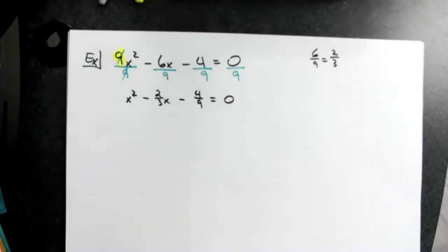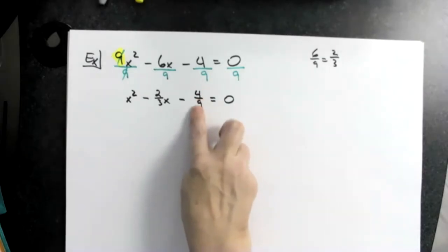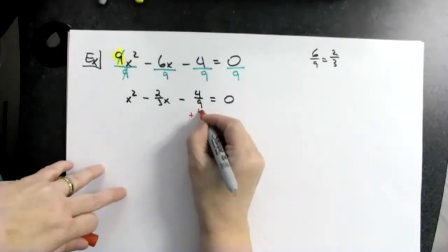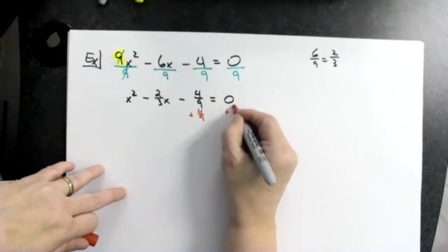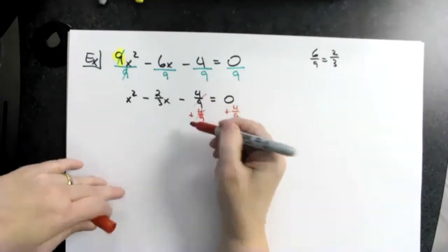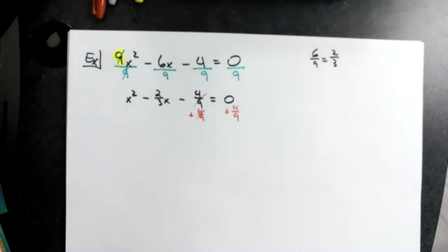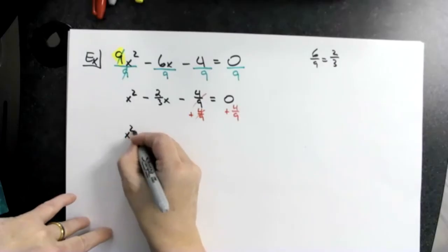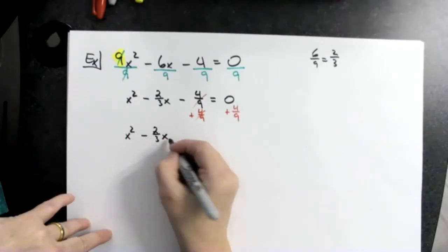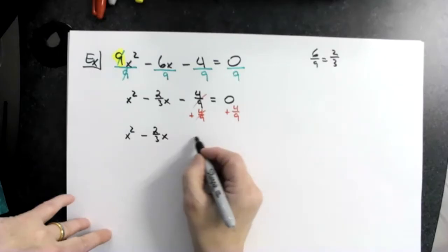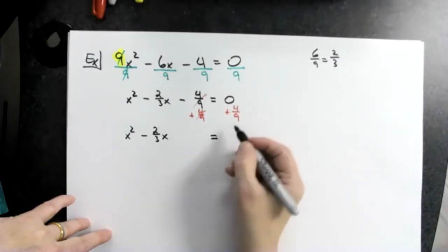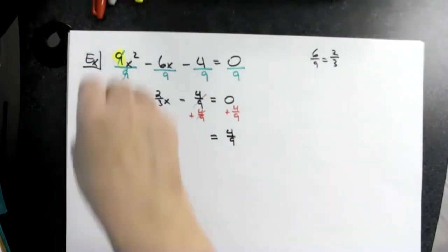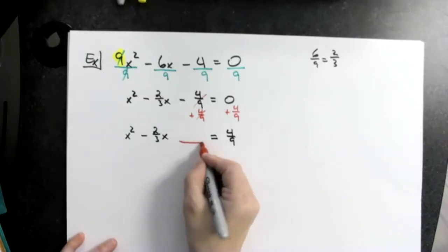So get rid of that coefficient. Now first step then is to take whatever number is right here and move it to the other side. I'm going to add four ninths to both sides. We got a lot of fractions at this point. Now I lined everything up. I'm going to keep the x squared here minus two-thirds x. I'm going to leave this blank right now. That equal sign I'm going to bring straight down. Zero plus four ninths puts four ninths here, which automatically creates me a spot right there.